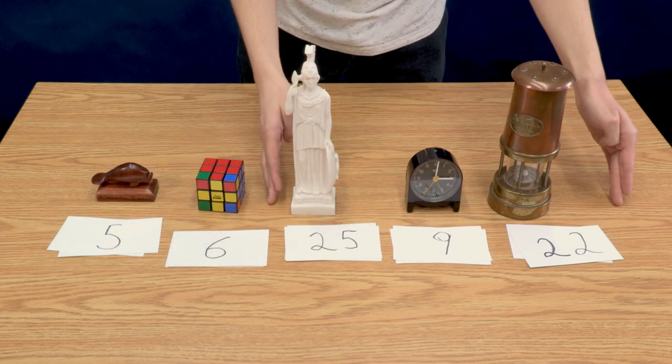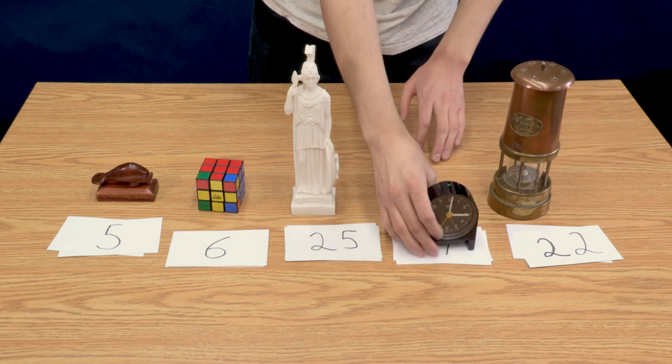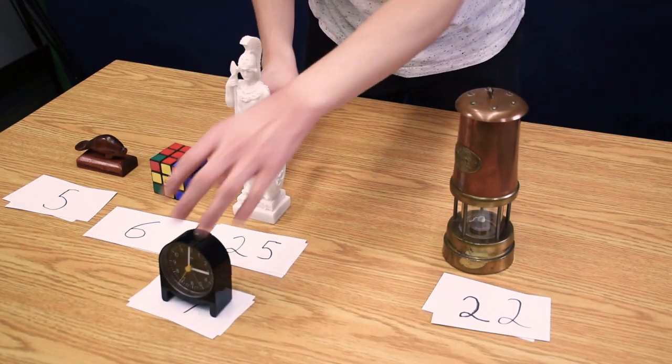Okay. So, we have these numbers left. Once again, I'll take the smallest number. That's this 9. And I'll swap it out with the statue here.